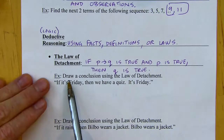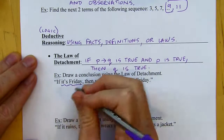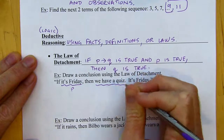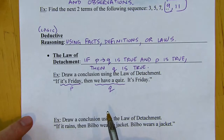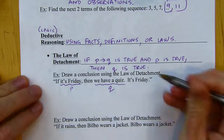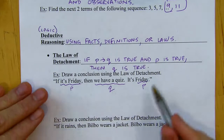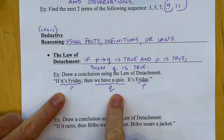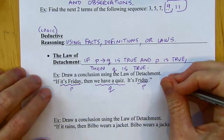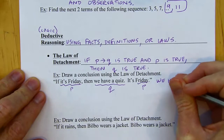Here's an example: draw a conclusion using the Law of Detachment. We have the conditional: if it's Friday, then we have a quiz. Then it says it's Friday — so that's my hypothesis being true. My conclusion is we have a quiz, because I know that being Friday always leads to having a quiz, assuming the conditional is true.